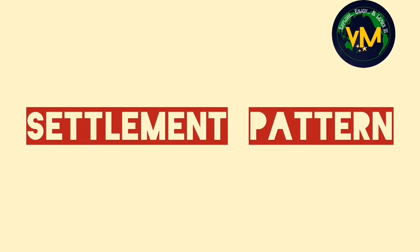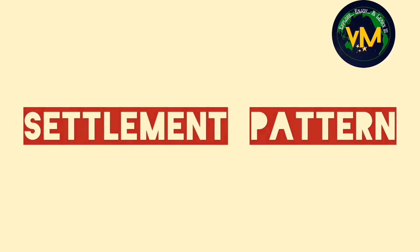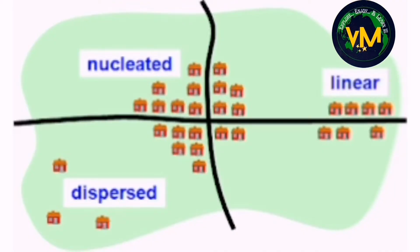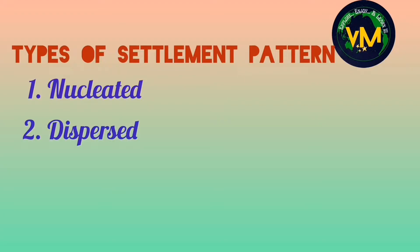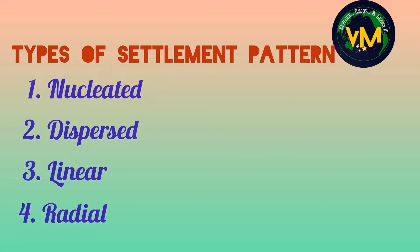So settlement pattern refers to the way in which the buildings and houses are arranged in the settlement. There are four common settlement patterns: nucleated, dispersed, linear, and radial.